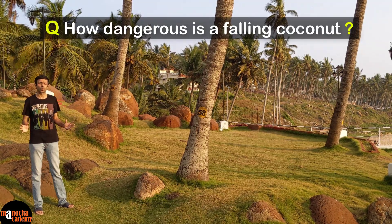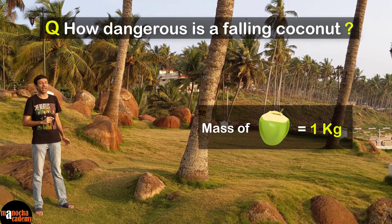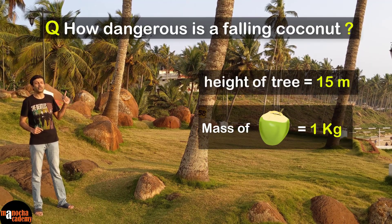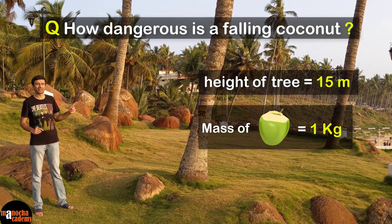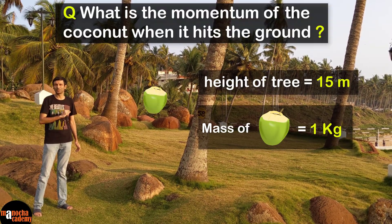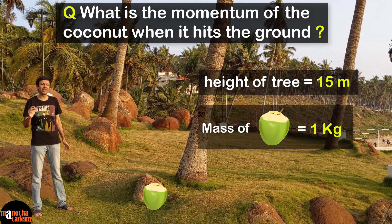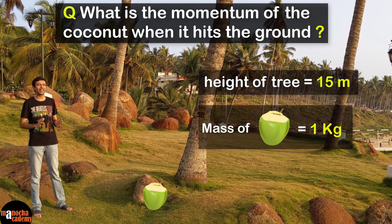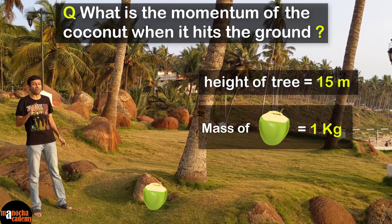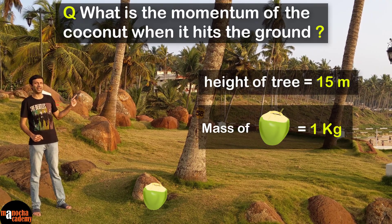So what do we know about the coconut? The coconut has a mass of about 1 kg, and it's falling from this tree which has an approximate height of about 15 meters. So can you calculate the momentum with which the coconut will hit the ground? That will tell us how dangerous it is. The question here is to find the momentum of the coconut when it hits the ground.